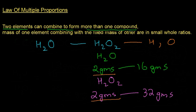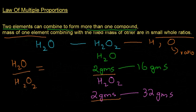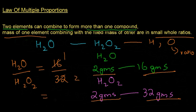Since hydrogen has the fixed mass, we take the ratio of oxygen. The ratio of oxygen in water to oxygen in hydrogen peroxide is 16/32, which simplifies to 1:2. This is another example demonstrating the Law of Multiple Proportions.